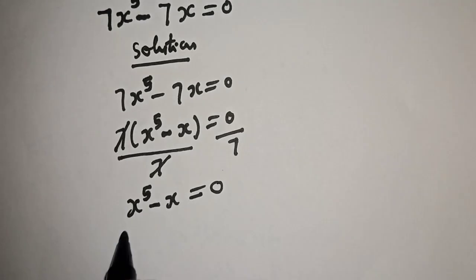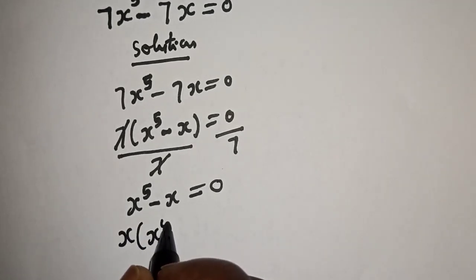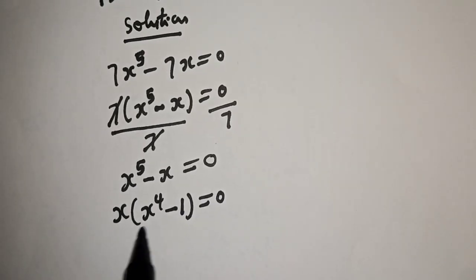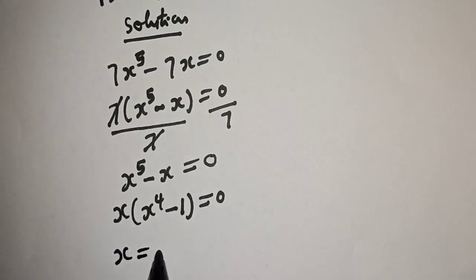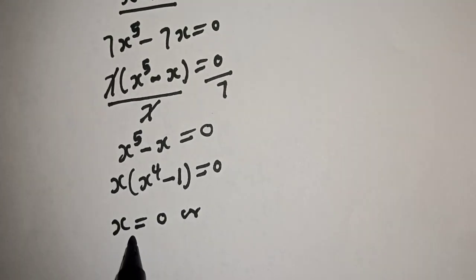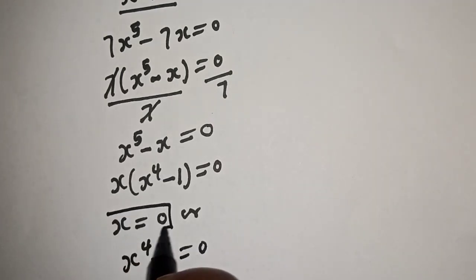From here, x is common again. We have x bracket x raised to power 4 minus 1 is equal to 0. There are two cases here. The first case is x is equal to 0, or x raised to power 4 minus 1 is equal to 0. x equals 0 is the first value of x.